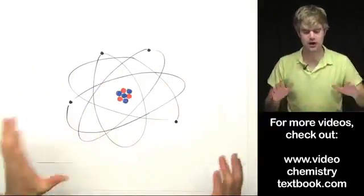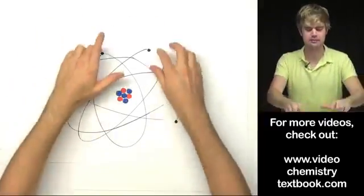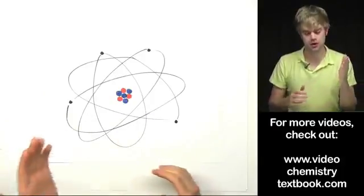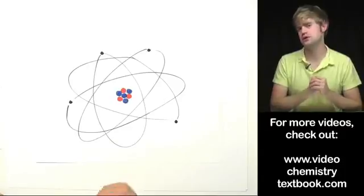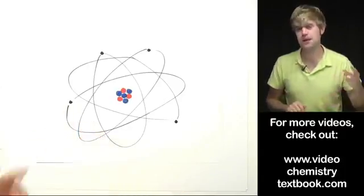Anyway, now that we've talked about what an atom looks like and the particles that make it up, we can go and discuss some of the characteristics that we can use to describe atoms. These are things like atomic number, mass number, and net charge.